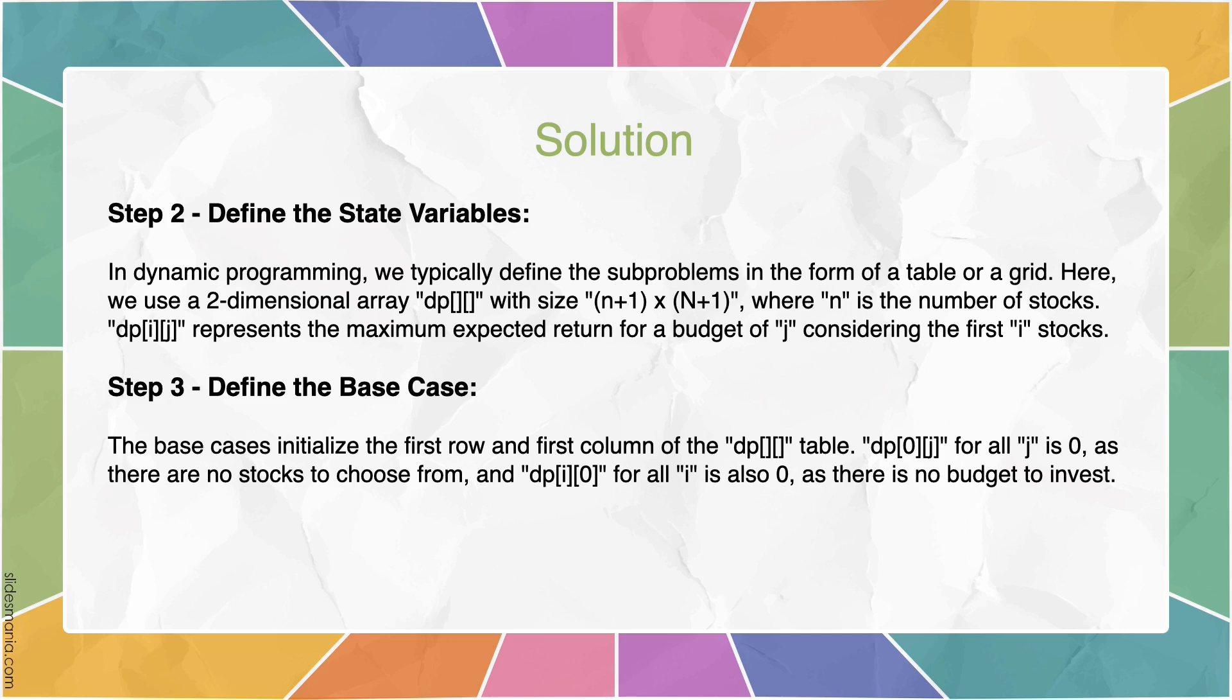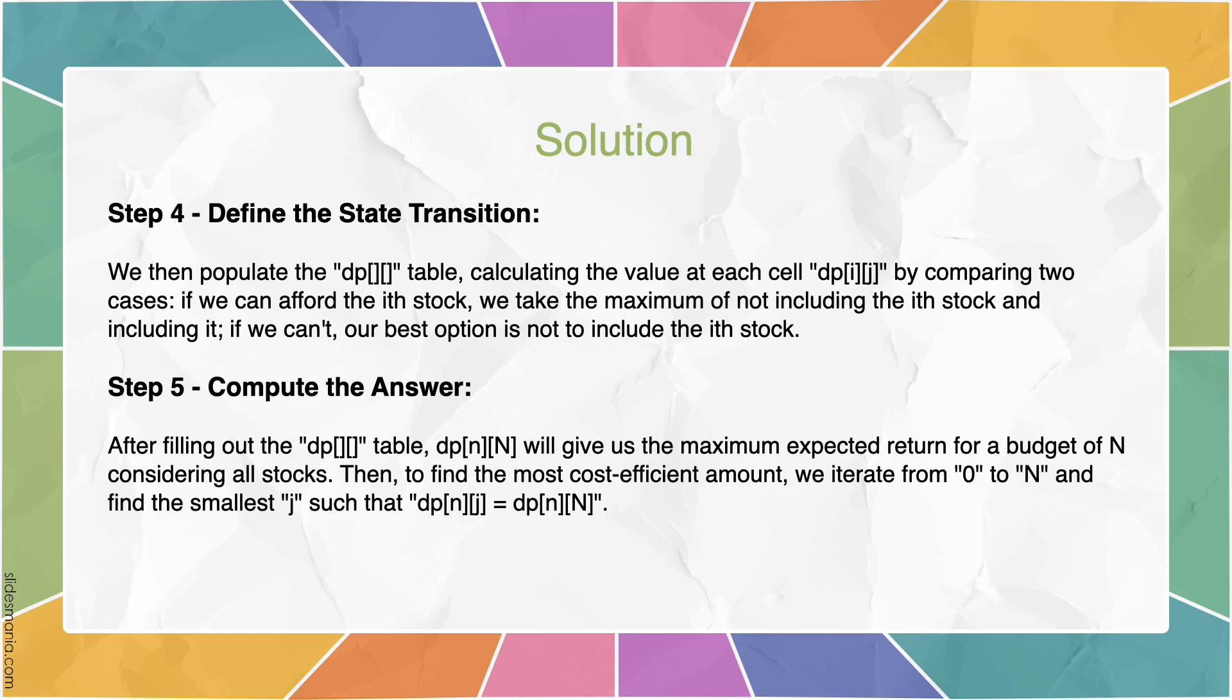We define the base case in our next step. The base cases initialize the first row and first column of the DP table. DP 0j for all j is 0, as there are no stocks to choose from. And DP i0 for all i is also 0, as there is no budget to invest. In the fourth step, we define the state transition. We populate the DP table in this step, calculating the value at each cell, DP ij, by comparing two cases. If we are able to afford the i-th stock, we will take the maximum of not including the i-th stock and including it. If we can't afford the i-th stock, then our best option is not to include the i-th stock.